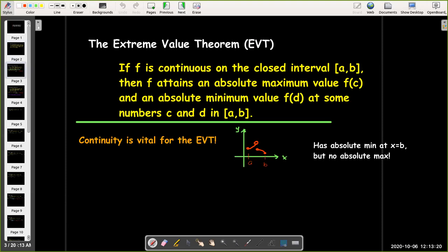Here's an example where we have a jump discontinuity. There is an absolute min at the endpoint, but there is no absolute max.